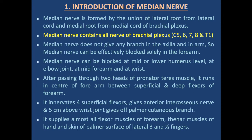The median nerve is formed by the union of the lateral root from the lateral cord and the medial root from the medial cord of the brachial plexus. It contains all nerve fibers of the brachial plexus from cervical 5, 6, 7, 8, and thoracic 1. The median nerve does not give any branch in the axilla and in the arm, so it can be blocked effectively solely in the forearm.